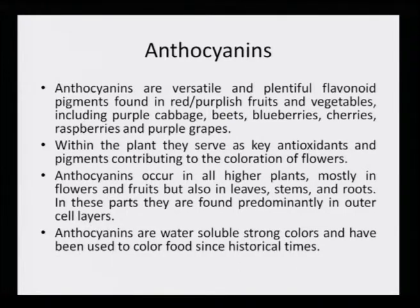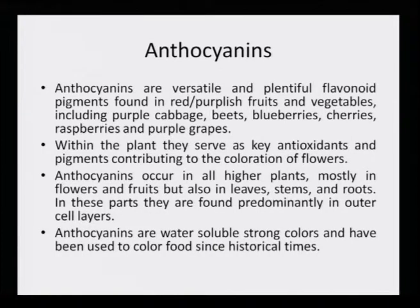In these plants, anthocyanins are found predominantly in the outer cell layer — they are in the cytoplasm. Anthocyanins are water-soluble, strong colors and have been used to color food since historical times. They are in the edible category of natural dyes, and their water solubility makes it more easy to use them in acidic or basic solutions, because solubility is no issue with anthocyanins.